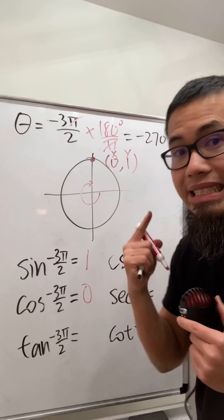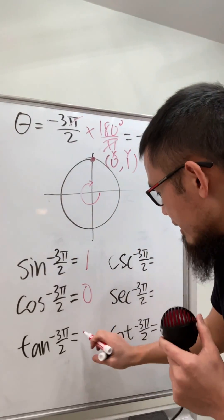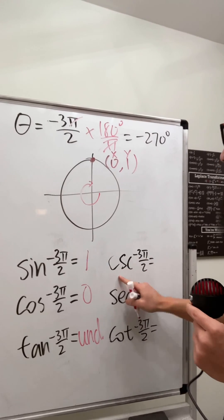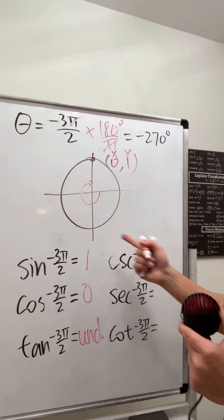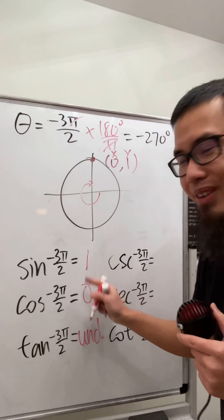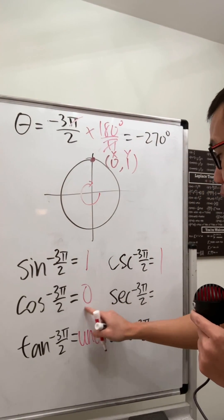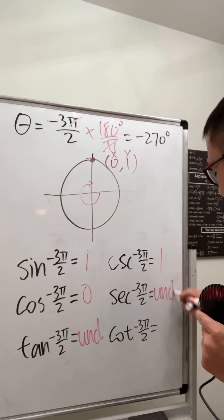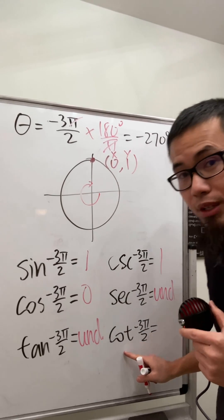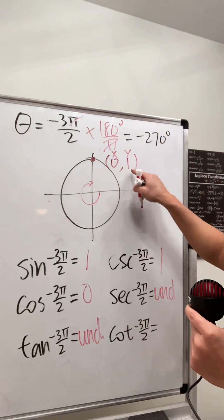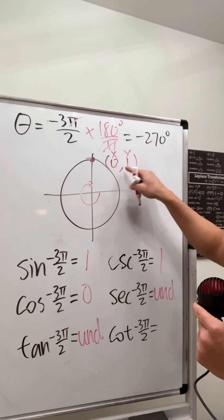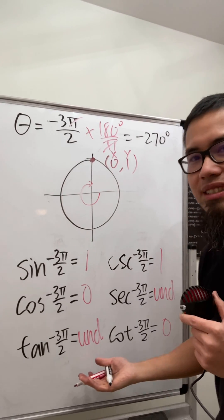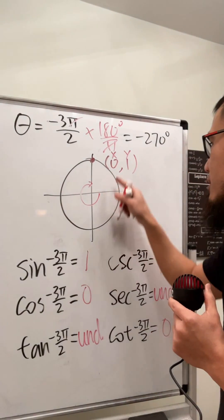Cosecant is 1 over 1 = 1. Secant is 1 over 0, which is undefined. Cotangent is x over y = 0 over 1 = 0. Don't think of it as one over undefined — use x over y directly, giving zero.